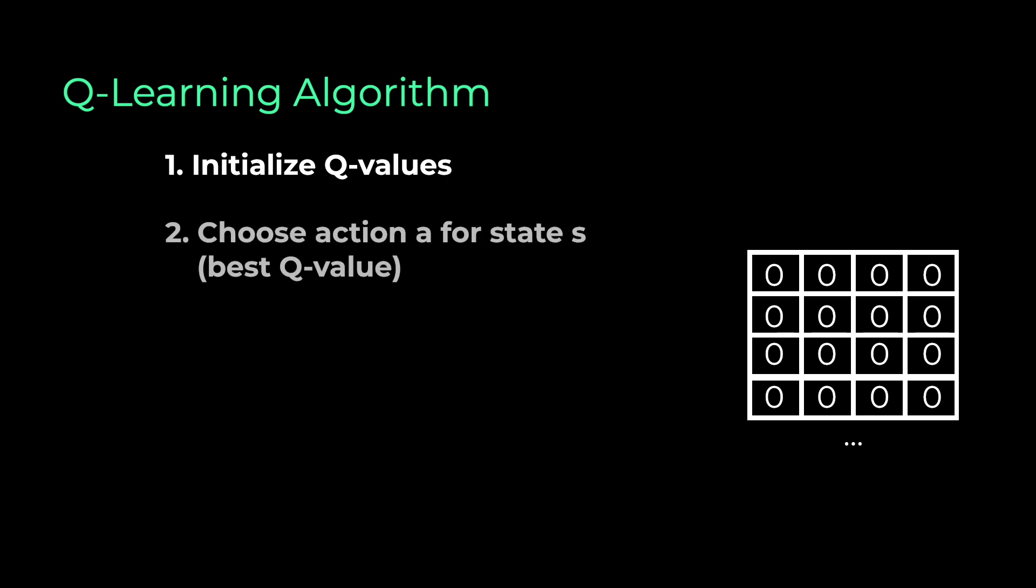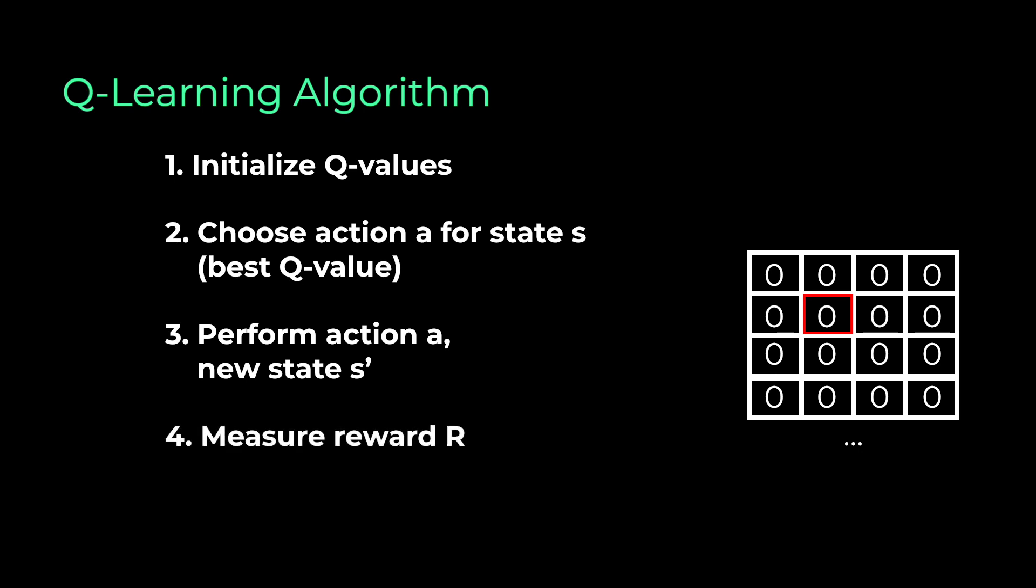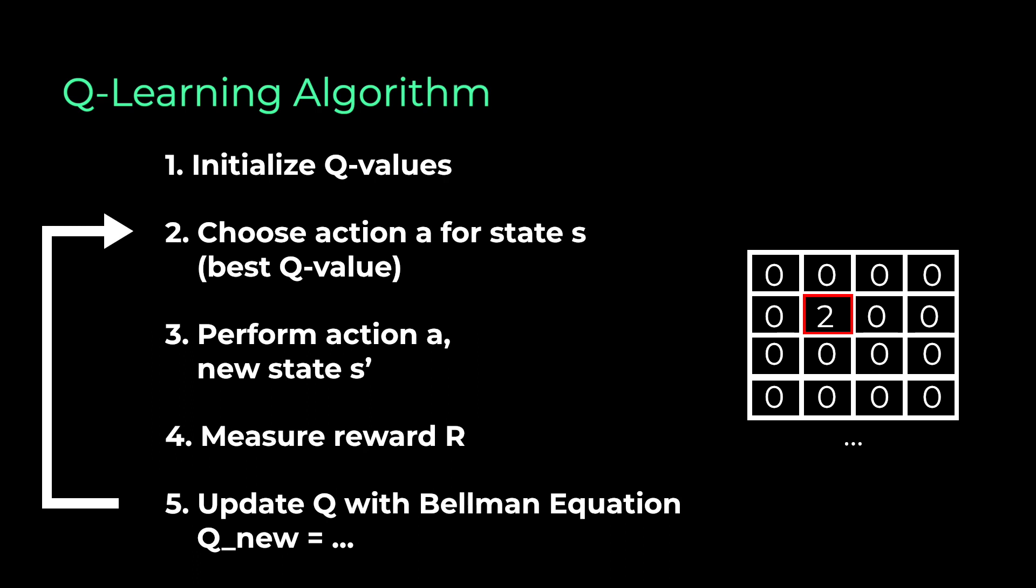First, we initialize all Q values, for example, with zero. Then we choose an action A in the current state S. This is based on the current best Q value. We perform this action and observe the outcome. So we get a new state. We also measure the reward after this action. And then we update Q with an update formula that is called the Bellman equation. And then we repeat steps two to five until the learning no longer improves and we get a nice Q table in the end.